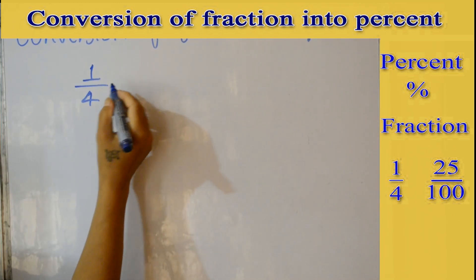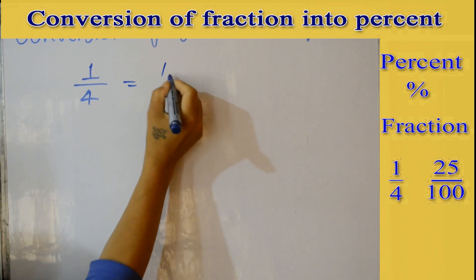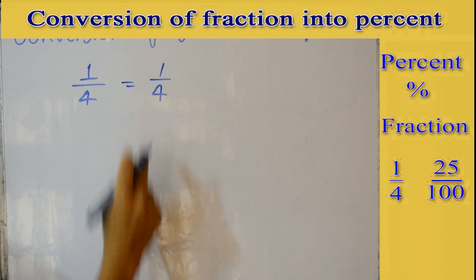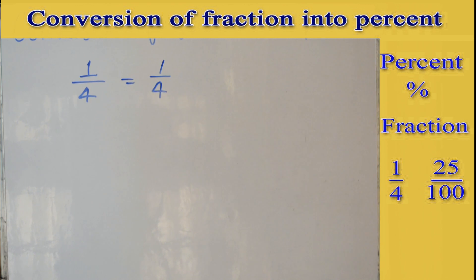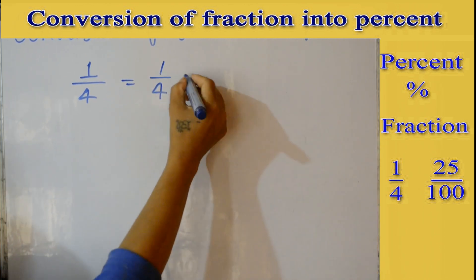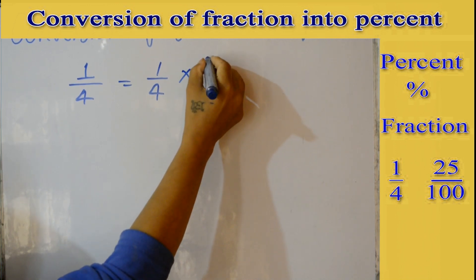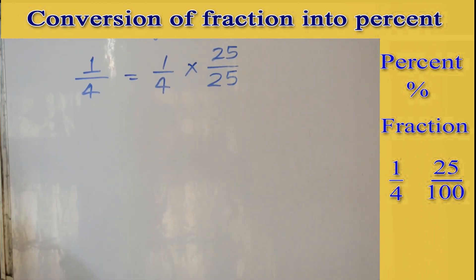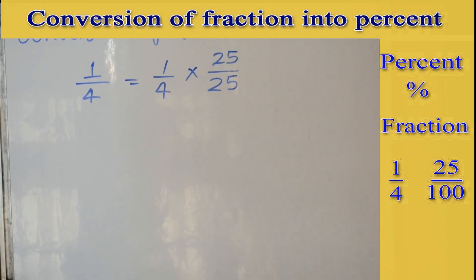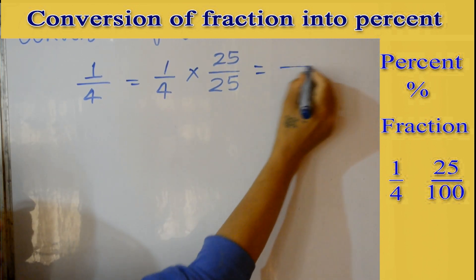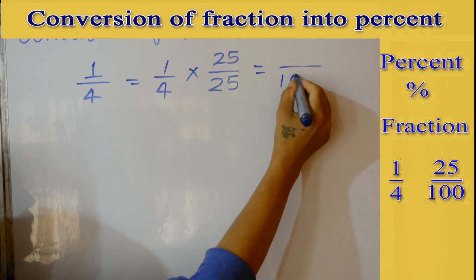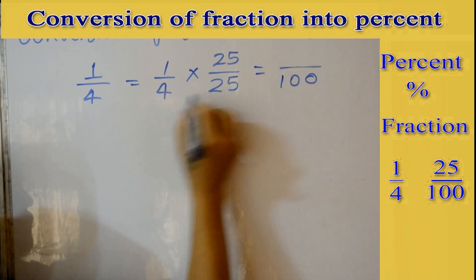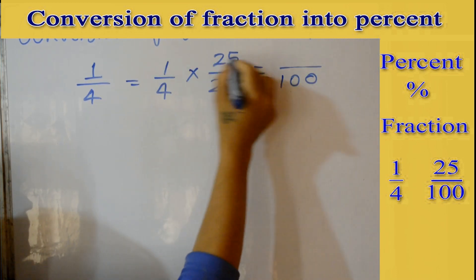First, we write the same fraction here. How can you convert this denominator into 100? If you multiply with 25, that becomes 100. So now we have 100 here: 4 times 25 is 100, and 1 times 25 is 25.